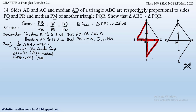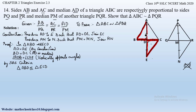We have AD = DE, BD = DC, and angle ADB = angle CDE. Since the two sides are equal and the included angle is equal, by SAS congruency criteria, triangle ABD is congruent to triangle ECD. Therefore AB = CE by CPCT (corresponding parts of congruent triangles are equal).